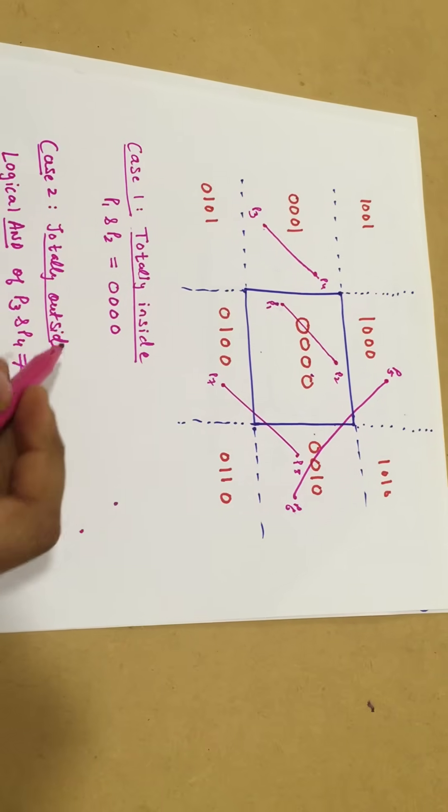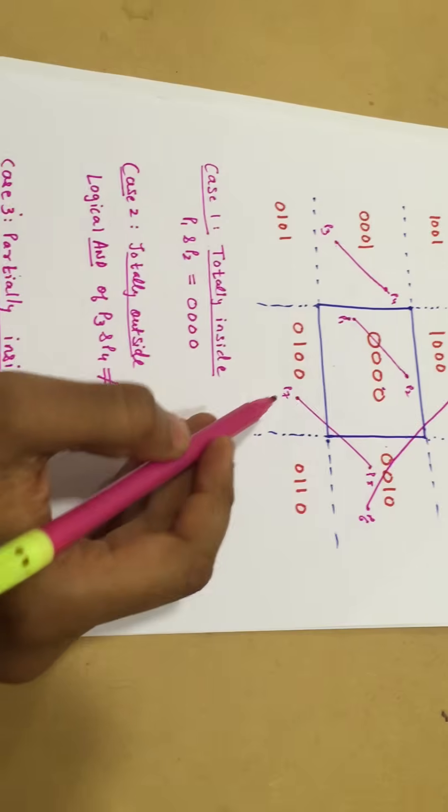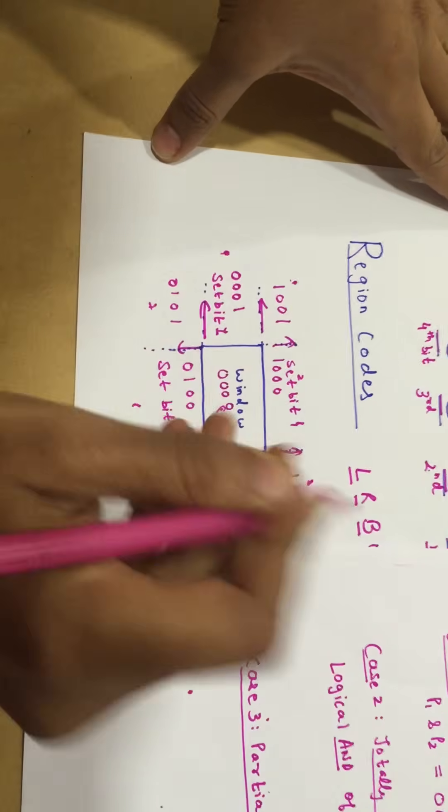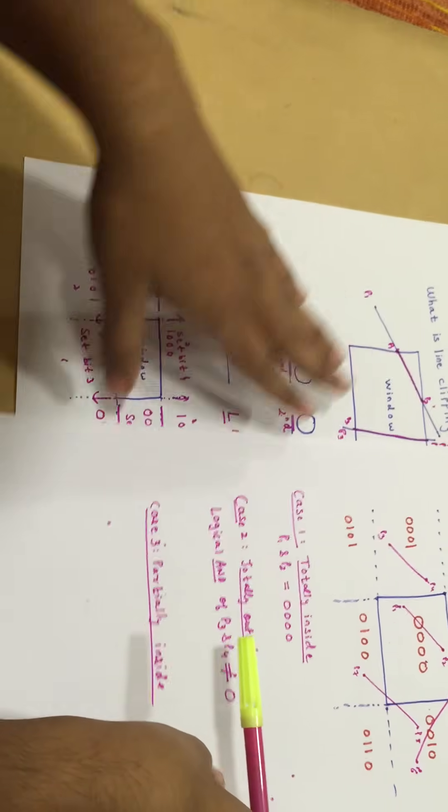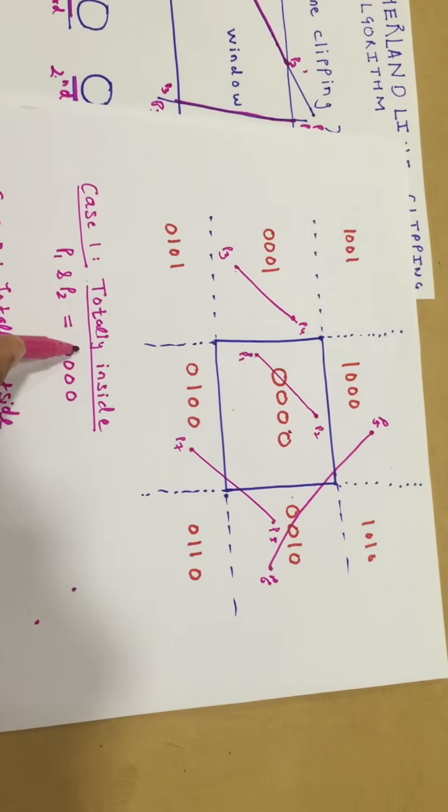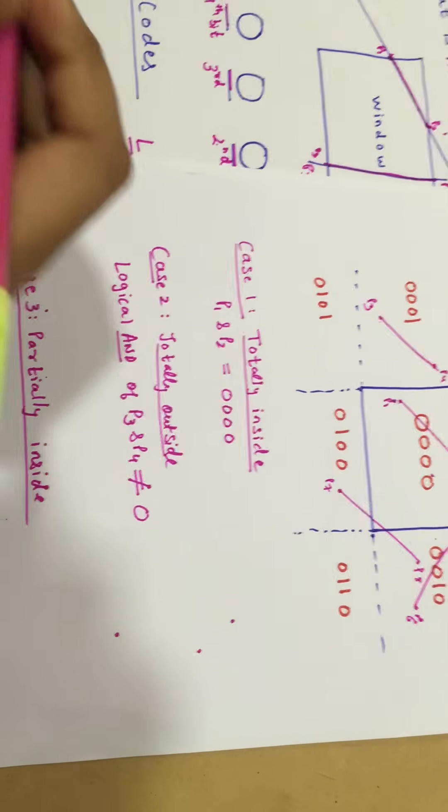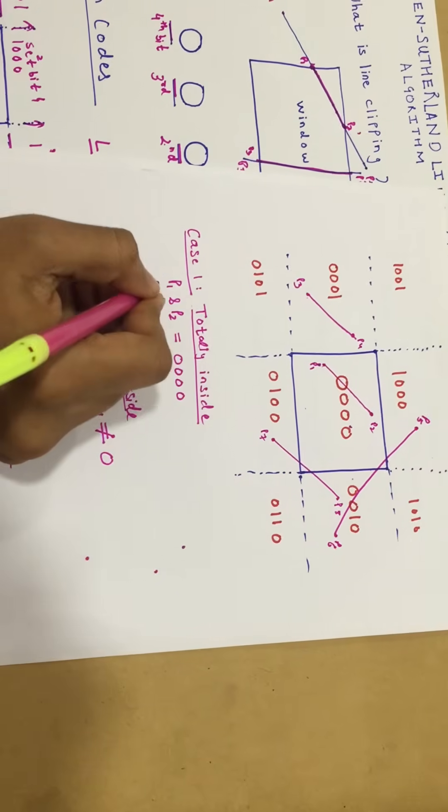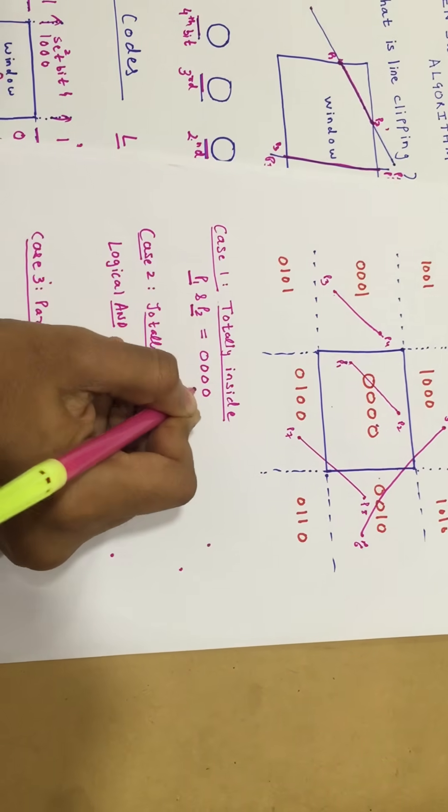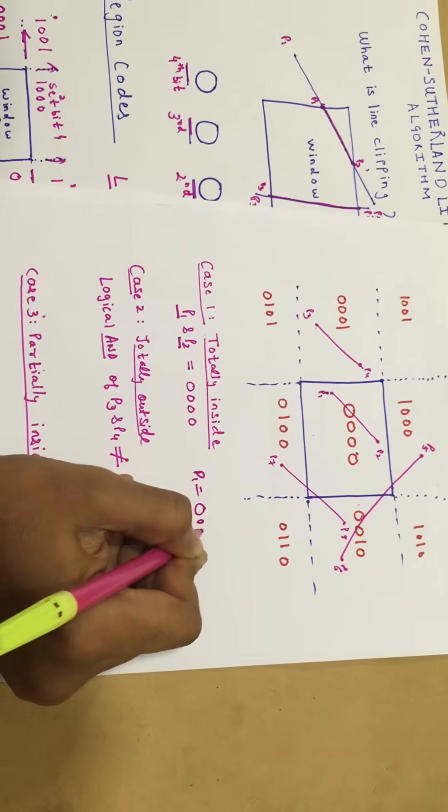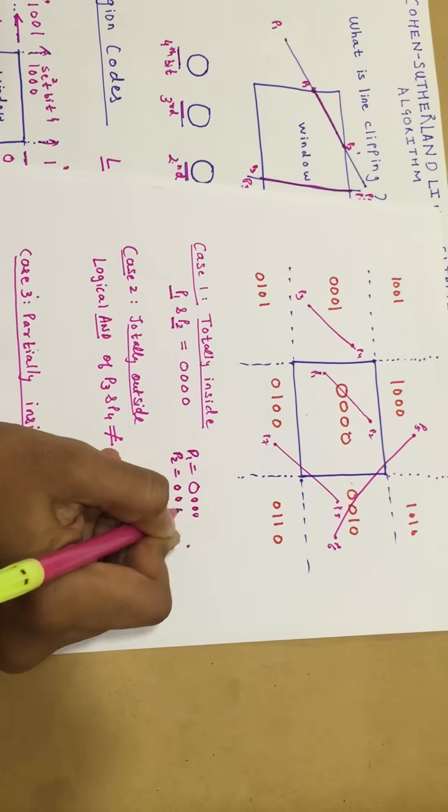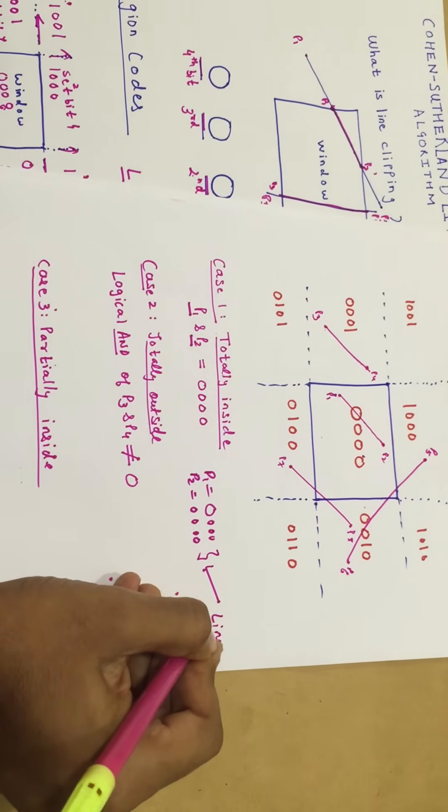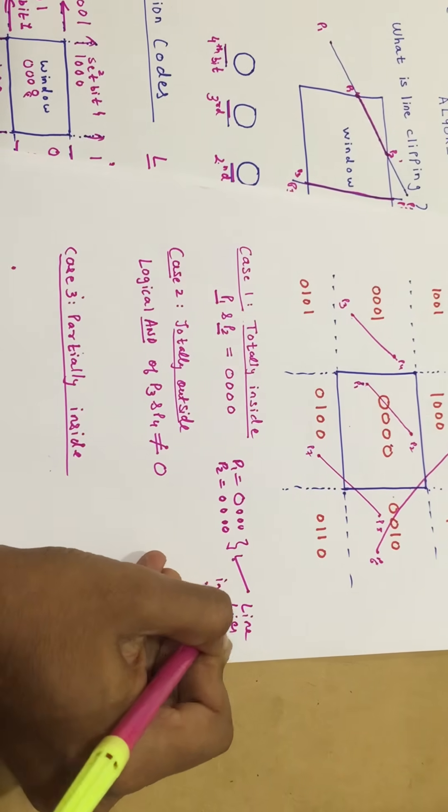Case 1: When both the points are lying inside my window. Also, one more thing I forgot is that we give the region code inside the window as 0,0,0,0. If I'm given the points P1 and P2 which are totally inside, I'll have to make a test which will allow me to identify the points which are inside my window. The condition for that is both the points P1 and P2 should be equal to 0. In this case, my P1 is equal to 0,0,0,0 and my P2 is also equal to 0,0,0,0. And hence, both the points are lying inside, and hence my line lies inside completely.